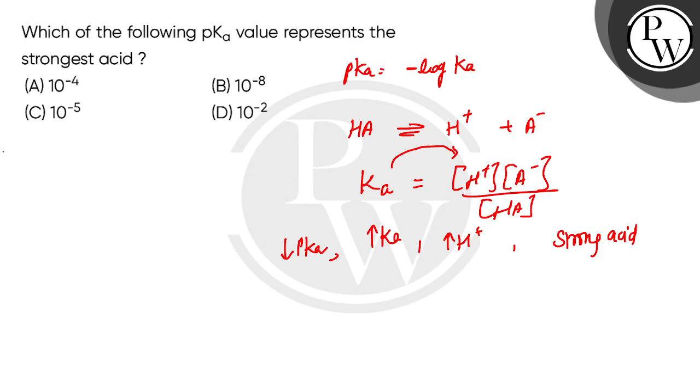So who has the smallest value? Who is the strongest acid? The strongest acid has the lowest pKa value. And if all the powers are negative, then the lowest value is 10 to power minus 8. So the B option is correct. The rest are incorrect.